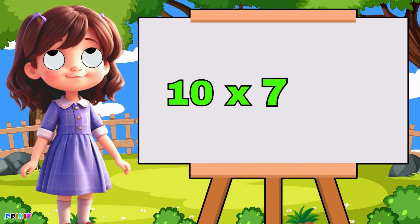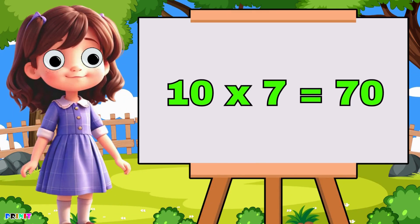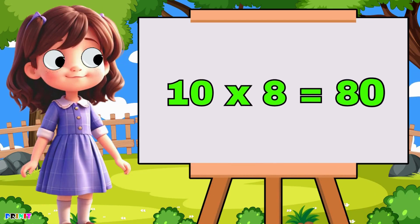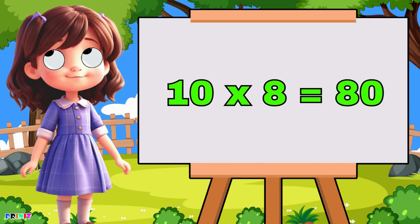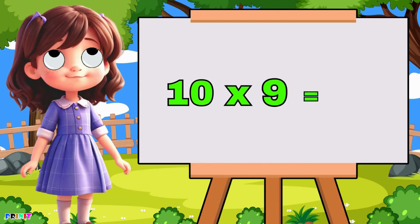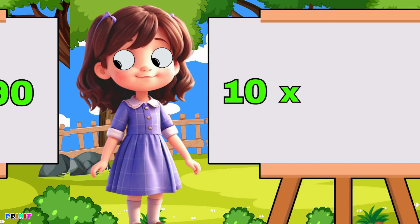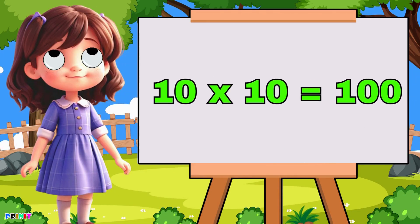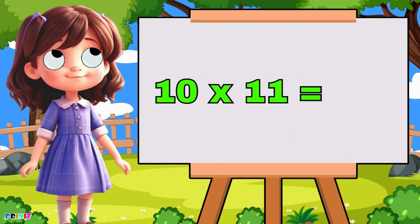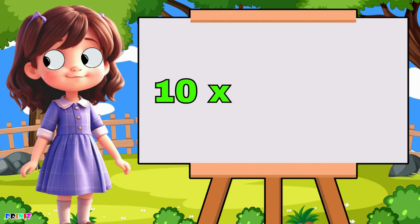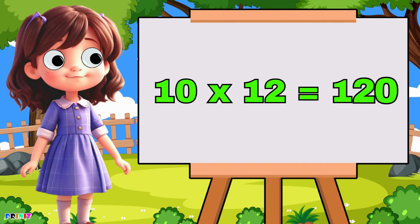Ten seven's are seventy, ten eight's are seventy, ten eight's are eighty, ten nine's are ninety, ten ten's are hundred, ten eleven's are one hundred and ten, ten twelve's are twenty.